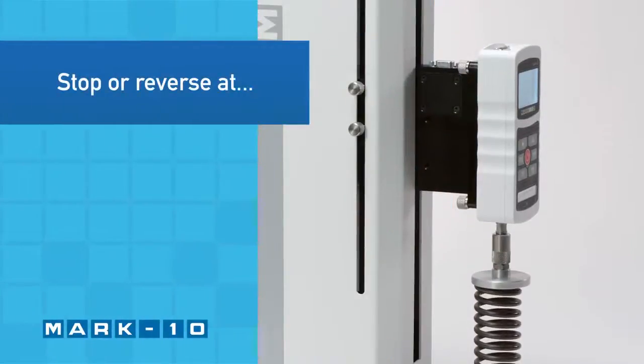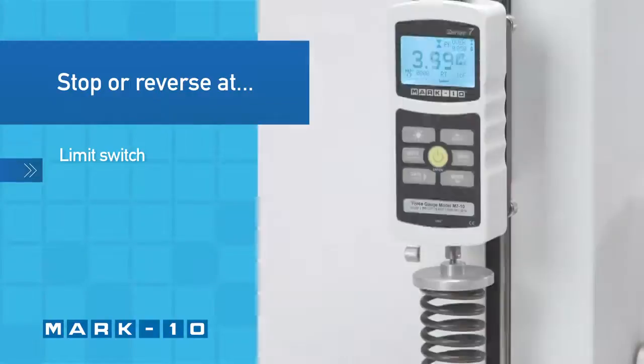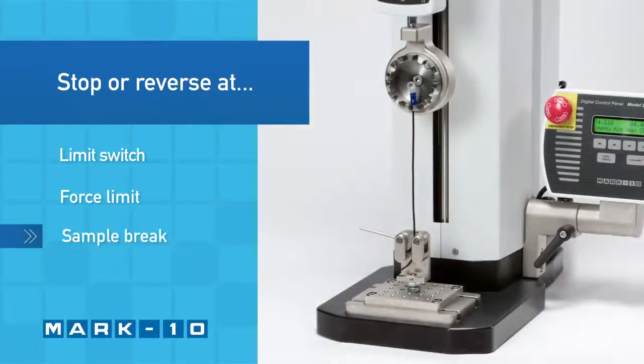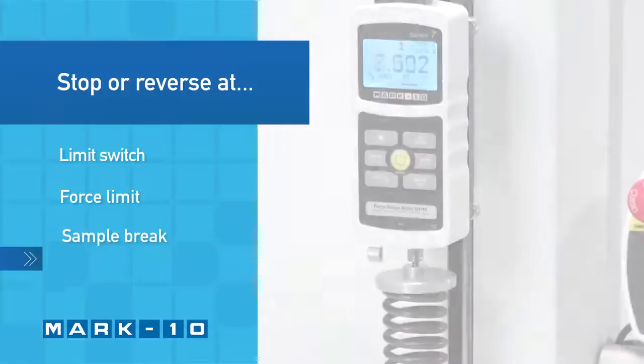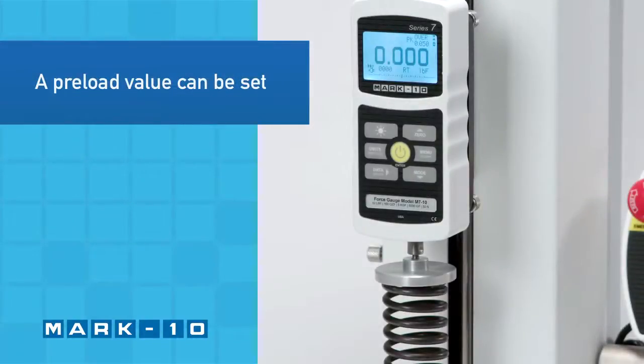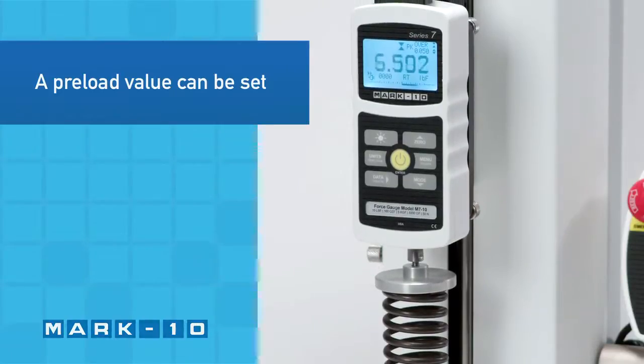The test stand can be configured to automatically reverse or cycle between limit switches, when reaching a force, when the sample has broken, or when a distance limit has been reached. A pre-load value can be set to automatically zero the travel display at initial sample contact.